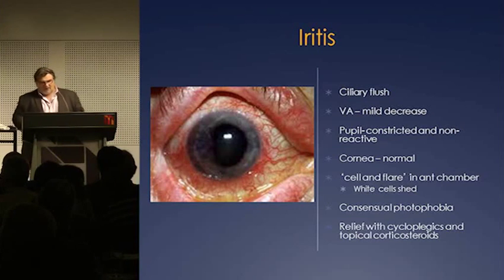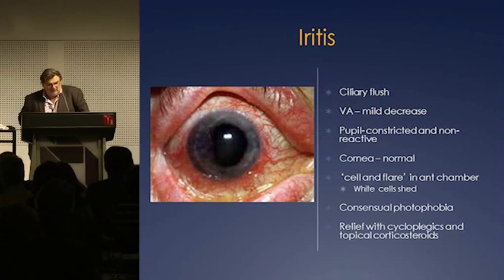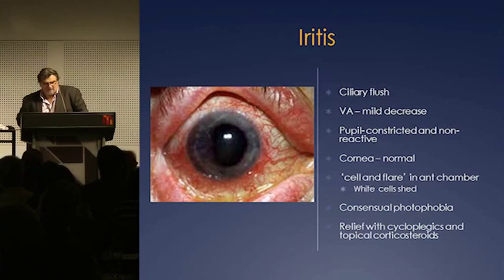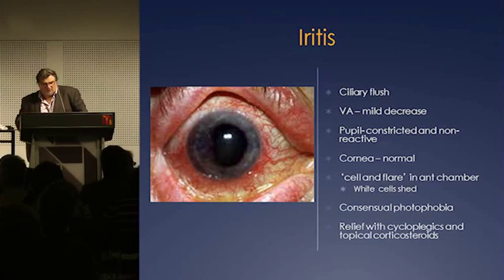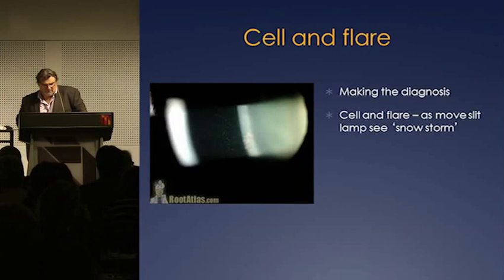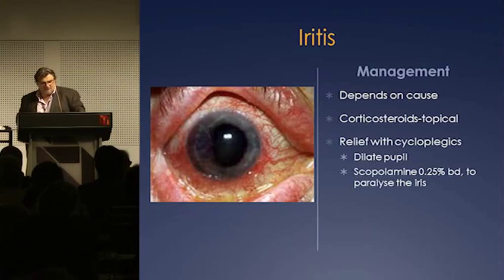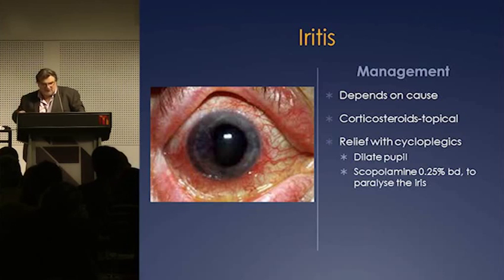This is often called anterior uveitis because it's part of the uveal tract — the iris, the ciliary body, and the choroid. Visual acuity may be mildly decreased. The pupils are constricted and not reactive, but the cornea is normal. There is a cell and flare response in the anterior chamber on slit lamp — that's because white cells are being shed. Cycloplegics give these patients relief and also decrease the chance of adhesion of the iris to the lens.